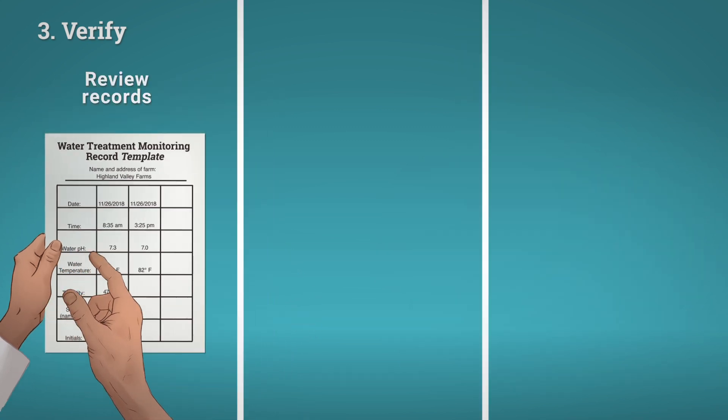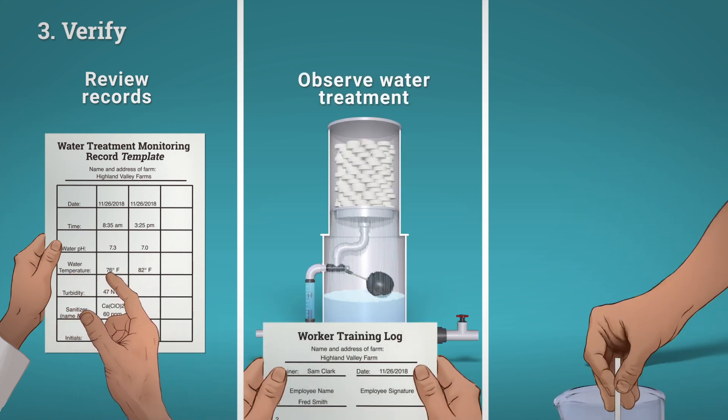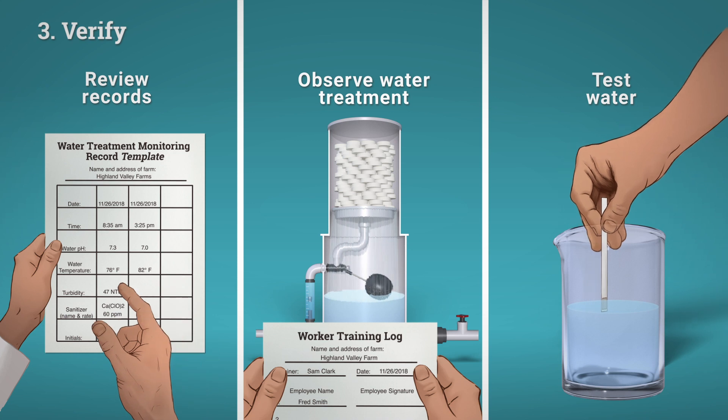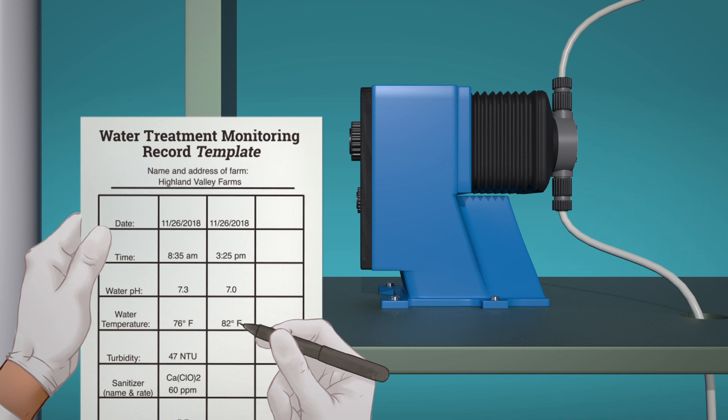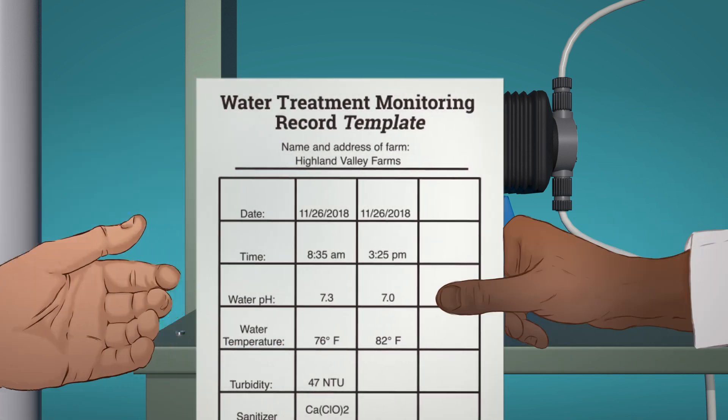Examples of verification include reviewing records of treatment monitoring, observing employees treating water, and water testing. Document and record these results every time you test for regulators and others on the farm who will want to verify the system has been implemented according to your plan.